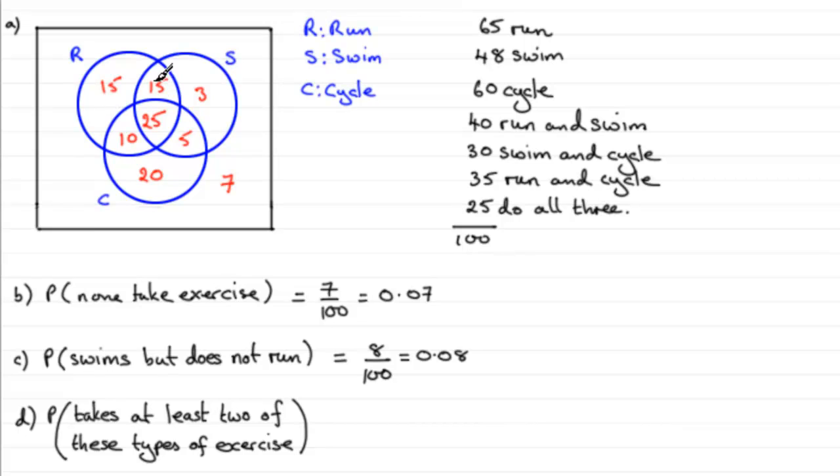Well, you've got these 15 people that do running and swimming, 10 people do running and cycling, and 5 people do swimming and cycling. And then you've got these 25 people that do all three.